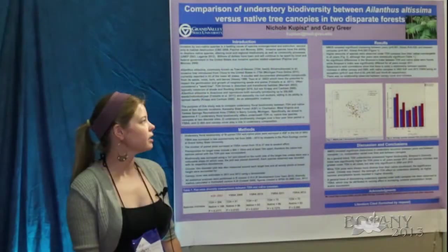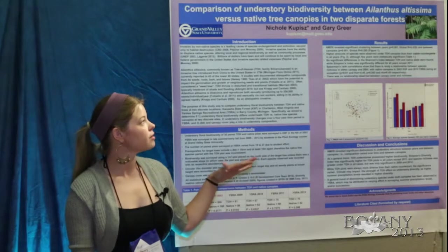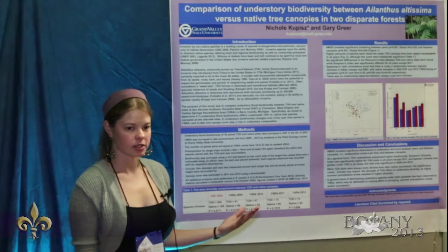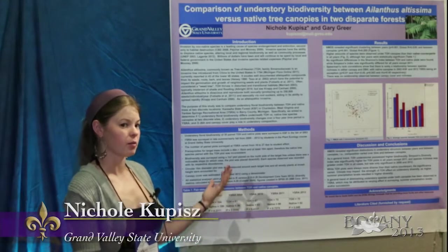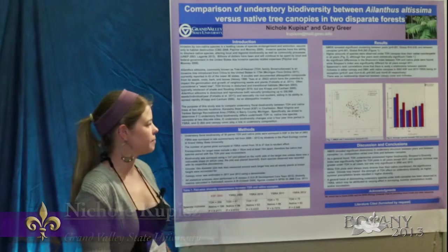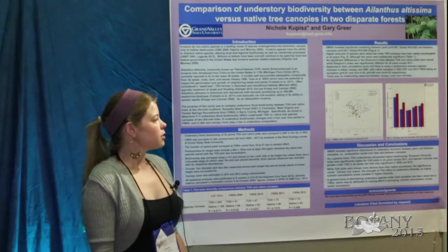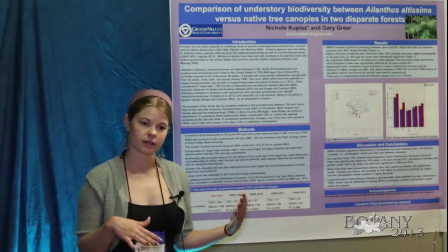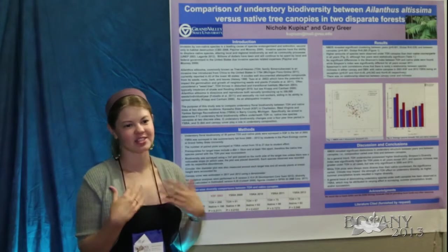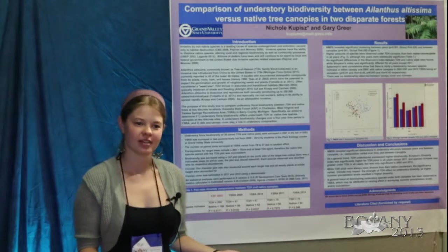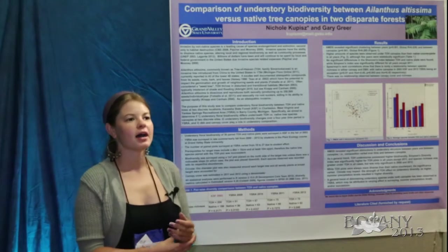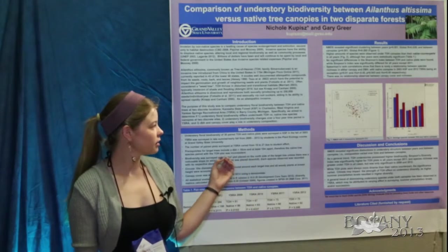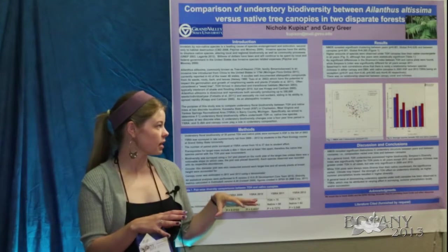He has been working on comparing the understory of Ailanthus altissima and a native tree pairing for a couple of years through his plant ecology class at Grand Valley, and then did another year in West Virginia at Kanawha State Park. What we expected to find was that Tree of Heaven would have lower biodiversity because it's an allelopathic invasive.